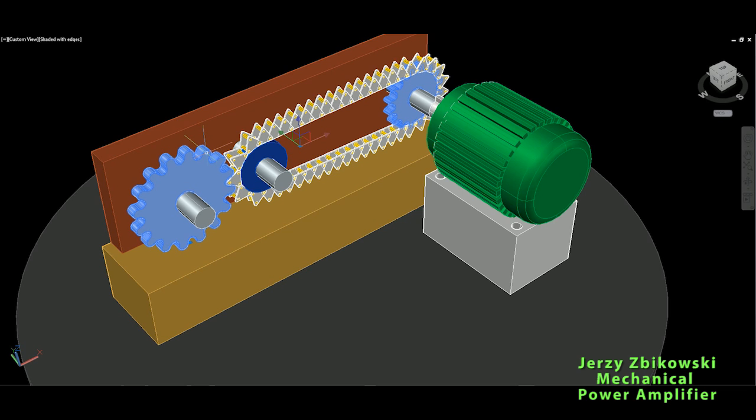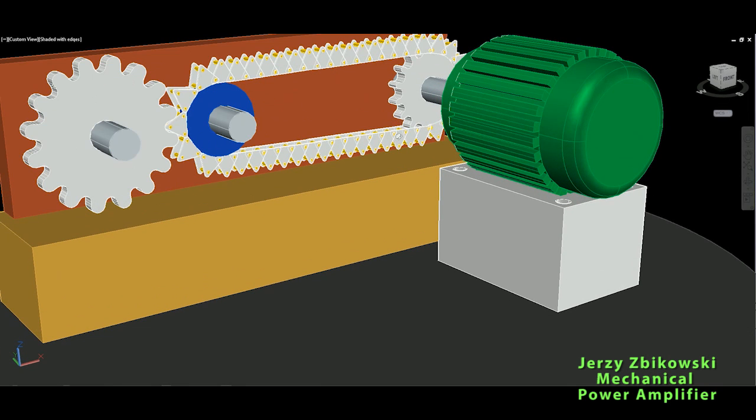They're the same, they're differently shaped, but they have the same number. In this case, 16 teeth are in this sprocket, and of course it is a smaller sprocket as well. And what is the difference in transmission?